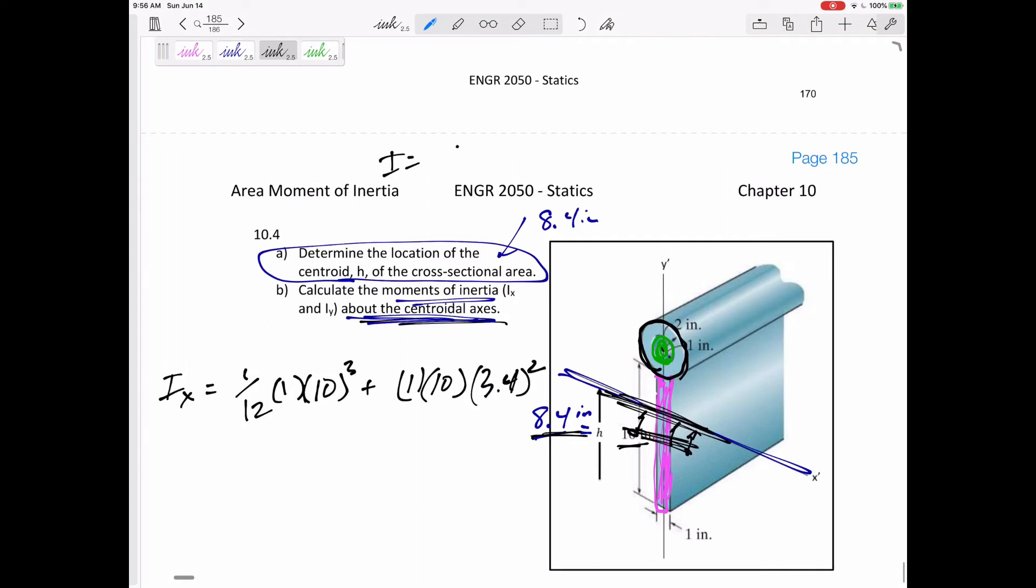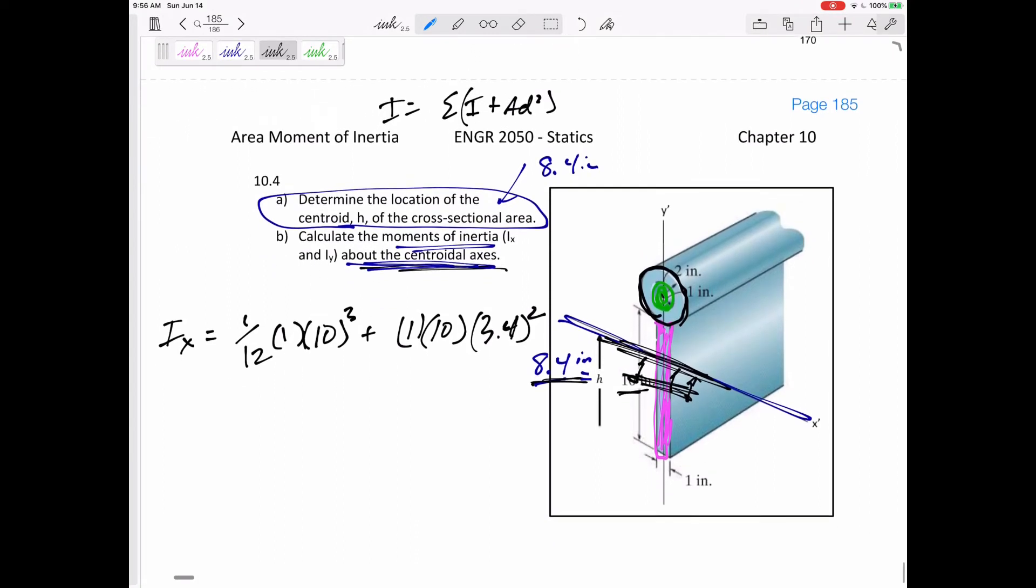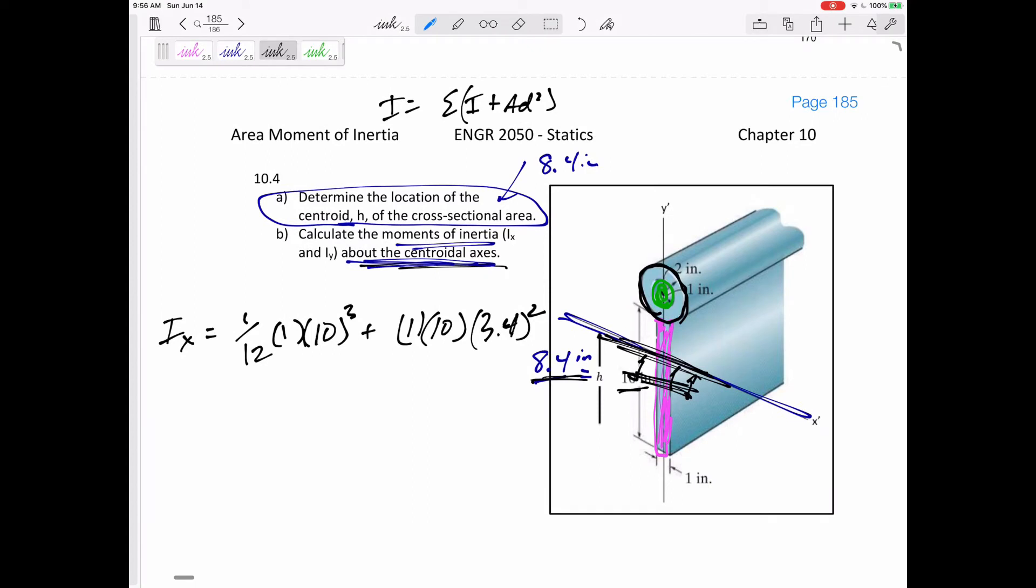So this is AD squared. Remember we're finding I is summation of I plus AD squared for every shape. All right, use the parallel axis theorem for that pink rectangle because the formula that I know is about the centroid, but the moment of inertia that I want is about this axis that is 8.4 inches from the bottom, about the centroid of the composite body.